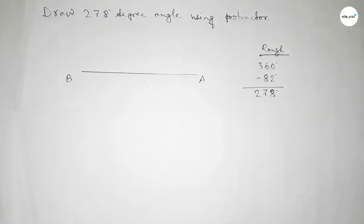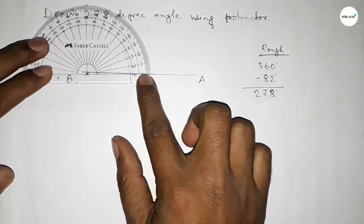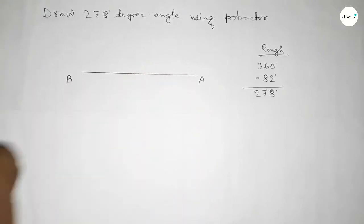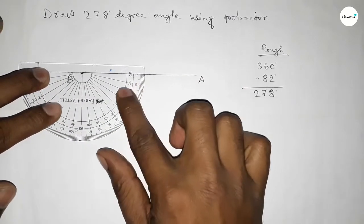to count 360 degree angle on the point B. So putting the protractor on point B by this way and counting angle. So this is 180 degree angle plus, putting the protractor on point B by this way